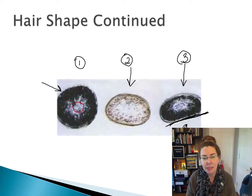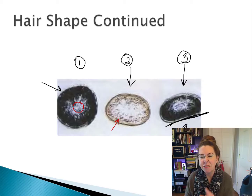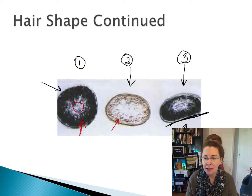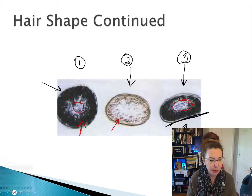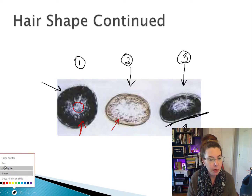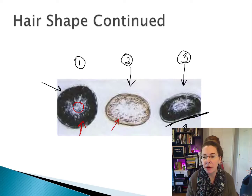In our second hair, the melanin is much less dense. The majority of it is pheomelanin — that lighter melanin. In our first hair, the majority would be the darker melanin, or eumelanin. In our third hair, you can see the central area that's primarily blank — that's where our medulla would be — and you have very heavy pigmentation to the outside, not quite as heavy on the curved side.